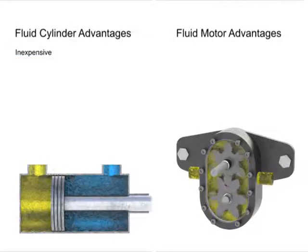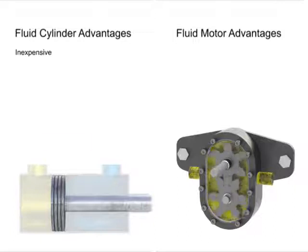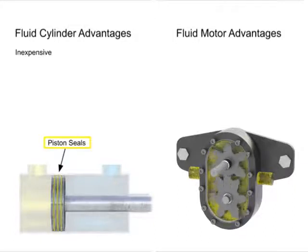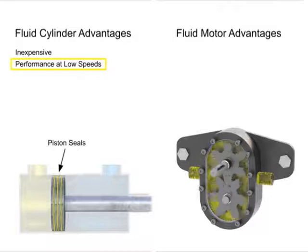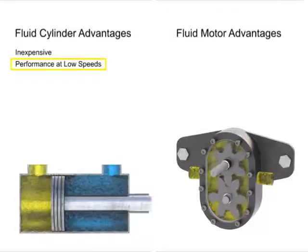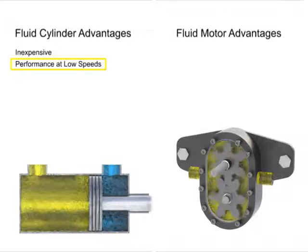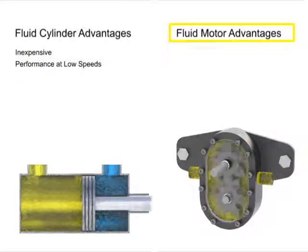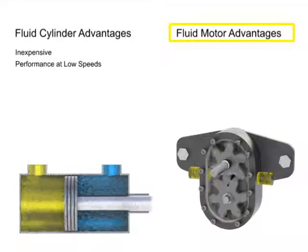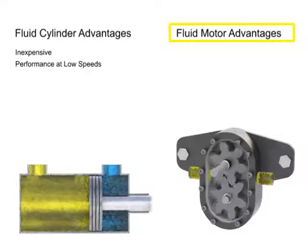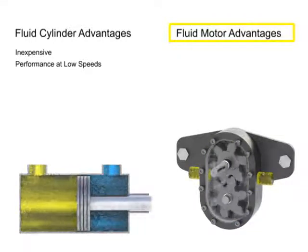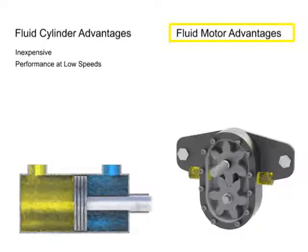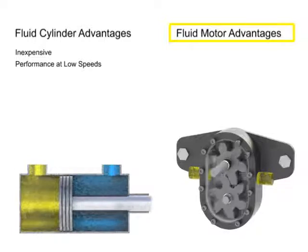Cylinders have leak-tight, non-metallic piston seals, which will give a consistent performance at very slow speeds against a wide range of load resistance. Fluid motors, on the other hand, have metal-to-metal internal surfaces, which use a small amount of leakage for lubrication purposes.